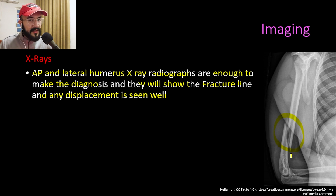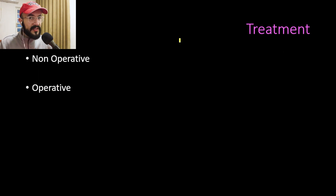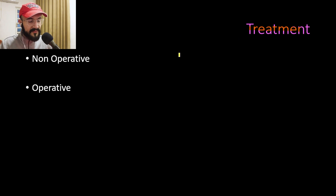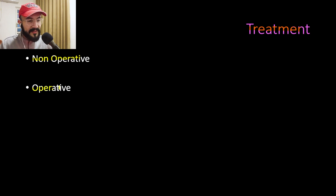For example, a lateral humerus X-ray may show a spiral fracture in the distal third of the humerus bone. Humeral shaft fractures are treated non-operatively in 90 percent of cases and operatively in 10 percent of cases.